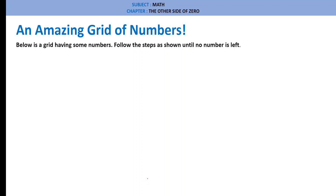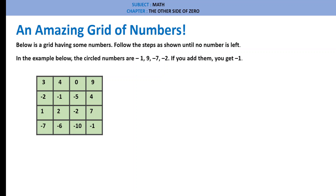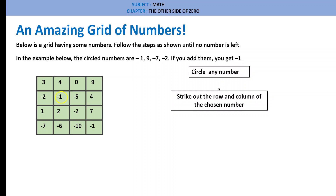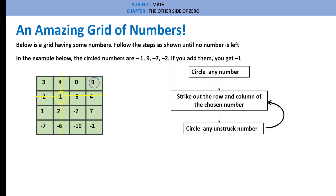An amazing grid of numbers: below is a grid with some numbers. Follow these steps until no number is left. Circle any number — for example, minus 1. Then strike out the row and column of the chosen number. Circle any unstruck number — for example, 9. Strike out its row and column. Repeat: circle minus 7, strike out row and column. Circle minus 2, strike out row and column. The circled numbers are minus 1, 9, minus 7, minus 2 — if you add them, you get minus 1.